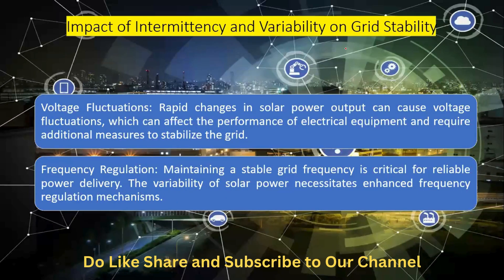There are some impacts of intermittency and variability on grid stability from the solar point of view. The first is voltage fluctuation. Rapid changes in solar power output can cause voltage fluctuations, which can affect the performance of electrical equipment and require additional measures to stabilize the grid, as voltage fluctuations are observed throughout the day as the day and time vary across months and years.